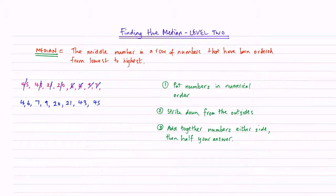And now let's strike down from the outside. So we've got a 45, a 4, a 43, a 6, a 21, a 7, a 20 and a 9. So my median is going to lie in between 20 and 9.